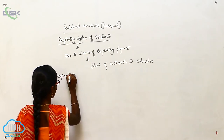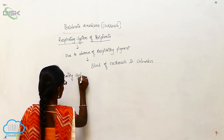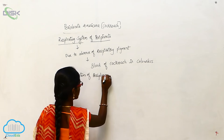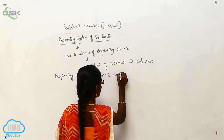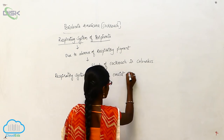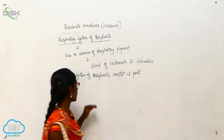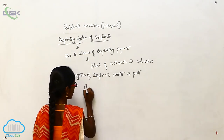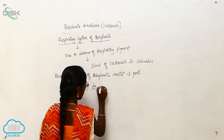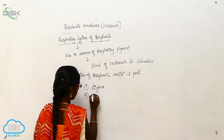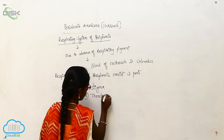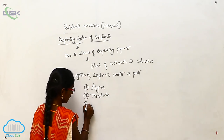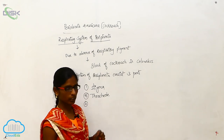The respiratory system of Periplaneta consists of three parts: Stigma, Tracheals, and Tracheoles.